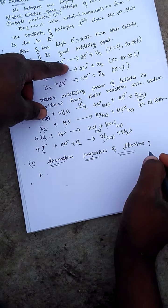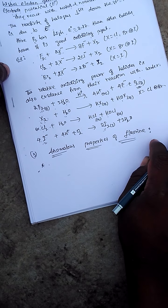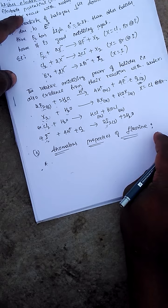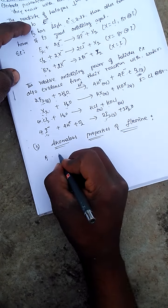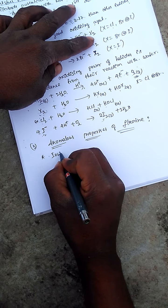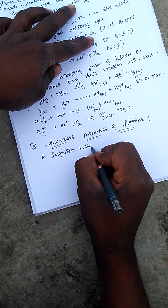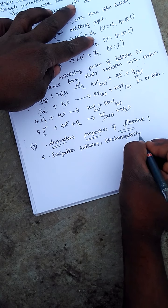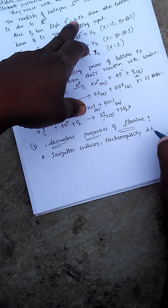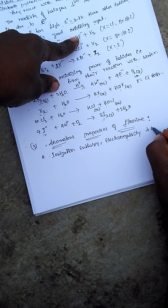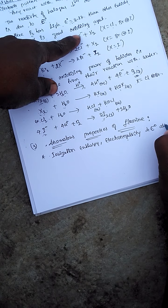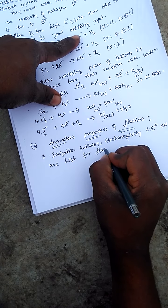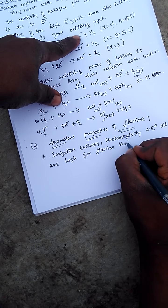The second period elements of p-block show anomalous properties compared to other elements in the same group. Fluorine also shows anomalous properties. Fluorine has high ionization enthalpy, high electronegativity, and a high E0 value of 2.87 — all higher than expected.